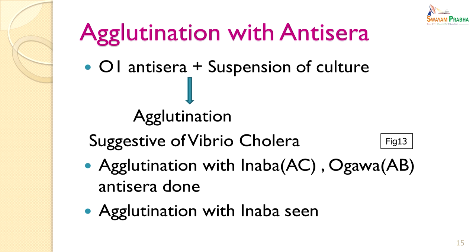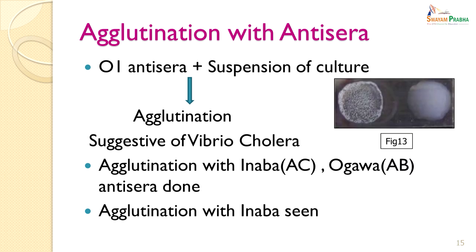To confirm a diagnosis of Vibrio cholerae, agglutination was attempted with O1 antisera. A suspension of the culture was taken and a drop of O1 antisera was added — there was agglutination. This suggested the Vibrio group of organisms, specifically Vibrio cholerae. Then agglutination with Inaba-specific antisera and Ogawa-specific antisera was done, and agglutination with Inaba was seen. The picture shows agglutination on the left-hand side; on the right-hand side is a control sample showing no agglutination.